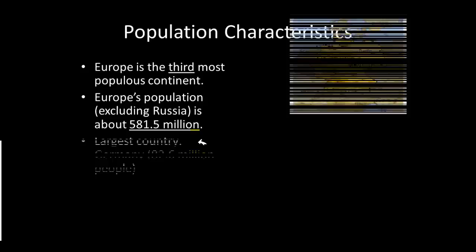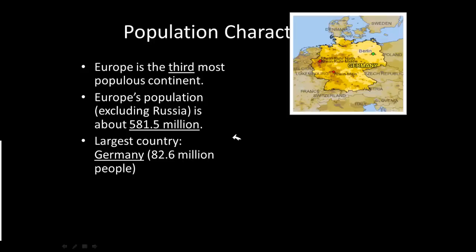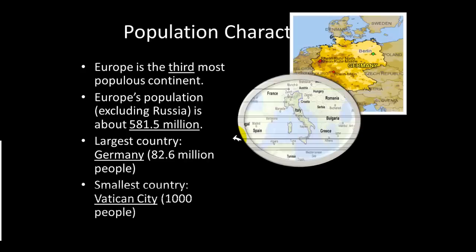The largest country in Europe by population count is Germany, at right about 82.6 million people. The smallest country in Europe is Vatican City, at right around a thousand people.